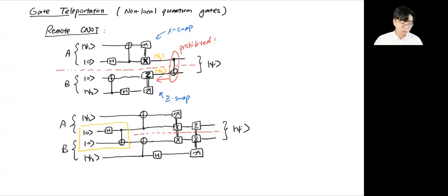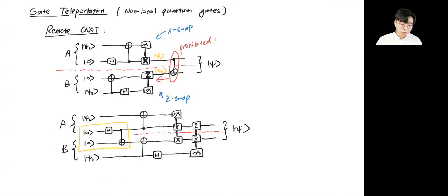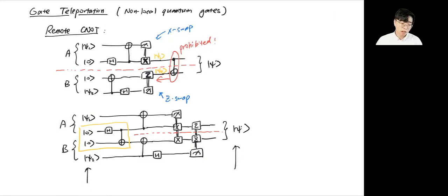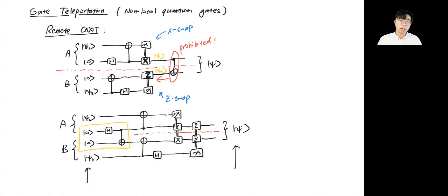So far we have seen state teleportation and gate teleportation. These are great examples where we use the property of quantum entanglement to accomplish useful applications. In these examples, the input to quantum teleportation is quantum states and the output is another quantum state. This type of quantum algorithm, like quantum teleportation, is a useful subroutine in a larger application. Especially when we talk about classical computational tasks, the input and output are classical data rather than quantum states.